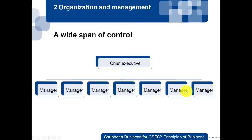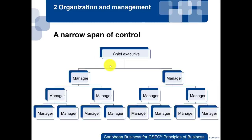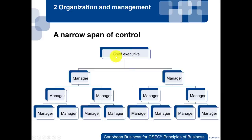With a wide span of control, every one of those managers answers to that one person — the CEO. A narrow span of control is where the CEO is in charge of just two managers, who are each in charge of two more, and so on down the line. So the span of control shows who is in charge of whom and the extent of one person's authority over others.